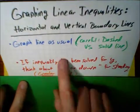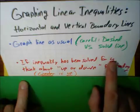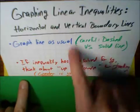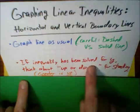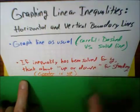If the inequality has been solved for y, the y-axis goes vertically. So, you're going to think about up or down for shading. You're going to either shade up or shade down, if the inequality has been solved for y.